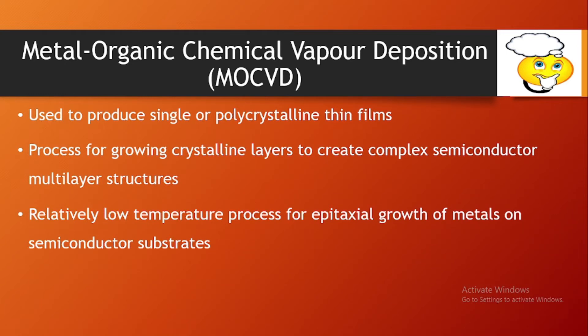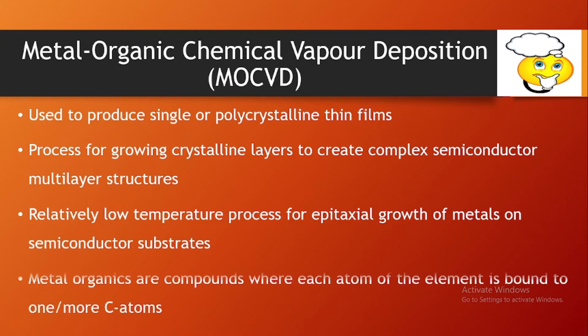Metal organics are compounds where each atom of the element is bound to one or many carbon atoms of the hydrocarbon groups. That is why this type of CVD is termed metal organic chemical vapor deposition.